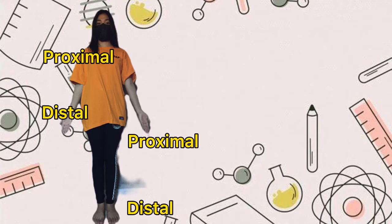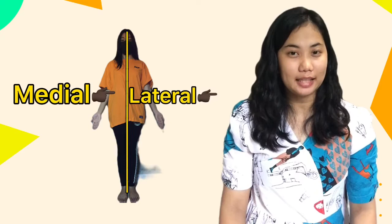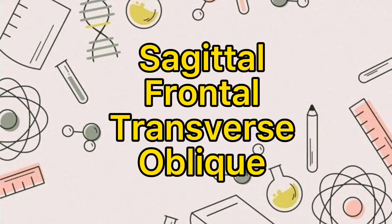Next, we have medial and lateral. When we say medial, it is closer to the midline. When we say lateral, it is farther away from the midline. Next, we have different anatomical planes, or body planes. We have four different types of body planes: the sagittal, frontal, transverse, and oblique.